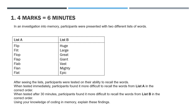Question one - a four-mark question, six minutes. Read the scenario: an investigation into memory where participants were presented with two different lists, A and B. When tested immediately, participants found it more difficult to recall List A in the correct order. When tested after 30 minutes, participants found it more difficult to recall List B in the correct order. Use your knowledge of coding in memory to explain these findings. Link back to lists A and B. Pause it and go.